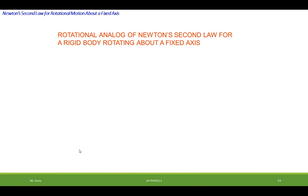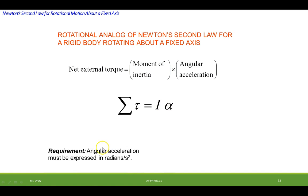The rotational analogous of Newton's second law for a rigid body rotating about a fixed axis is the net external torque is equal to the moment of inertia times the angular acceleration. So the sum of the torques is equal to the moment of inertia times the acceleration, but it has to be angular acceleration. So this acceleration has to be angular and has to be in radians per second squared.